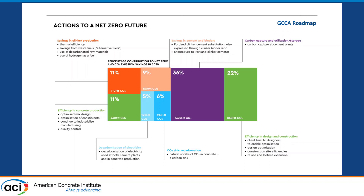They're kind of coalescing around the same recommended actions, and if you examine the roadmaps, you can often find there's two things included. They're going to take credit in their roadmap for natural carbonation of cementitious materials in service, and then the biggest part of many roadmaps is carbon capture, storage, and utilization — in this case the purple one. While utilization will not represent the majority of the purple 36 percent, it is part of the strategies that have been identified.